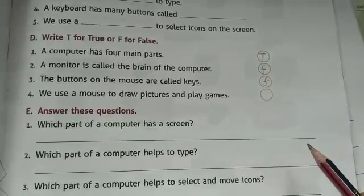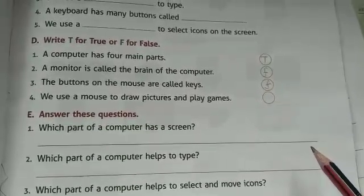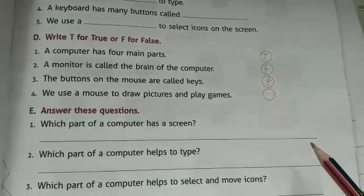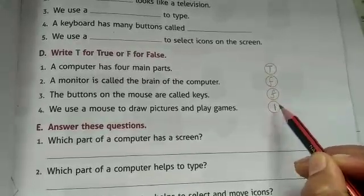Fourth is: we use a mouse to draw pictures and play games. Mouse ka use drawing mein aur games ko play karne mein karte hain. This is right.